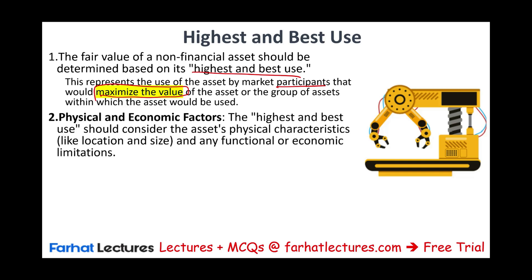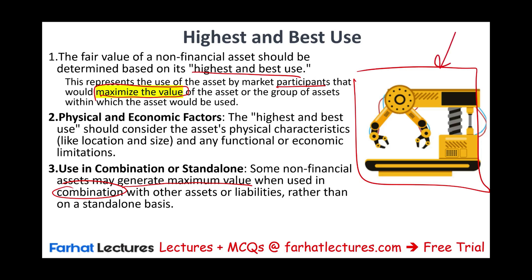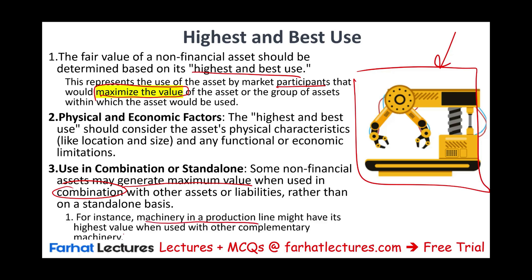We must take into account physical and economic factors: the condition of the asset — whether it is brand new, old, or in between — and the location of the asset, whether it is actively producing or in a place where it is useless. We also consider any functional or economic limitations. Additionally, we have to look at the asset in combination with other assets versus on a standalone basis. Some non-financial assets generate maximum value only when used in combination with other assets. For example, a machine on a production line might be useless by itself but have its highest value when used with complementary machinery. We must take that into account when assessing the highest and best use.